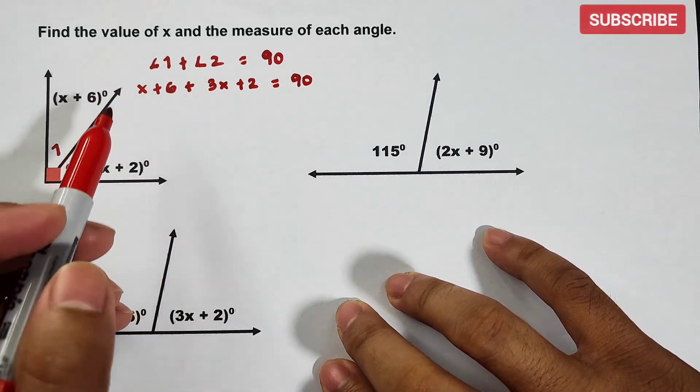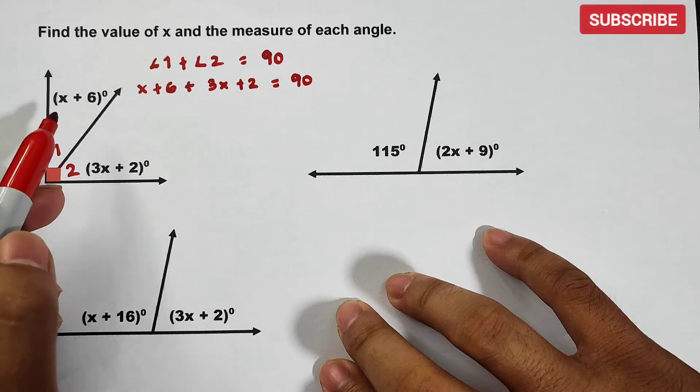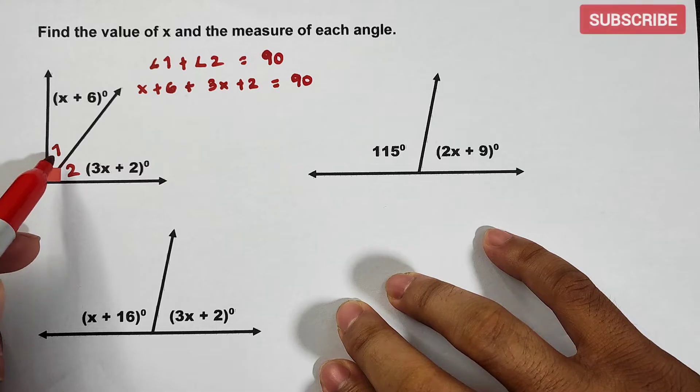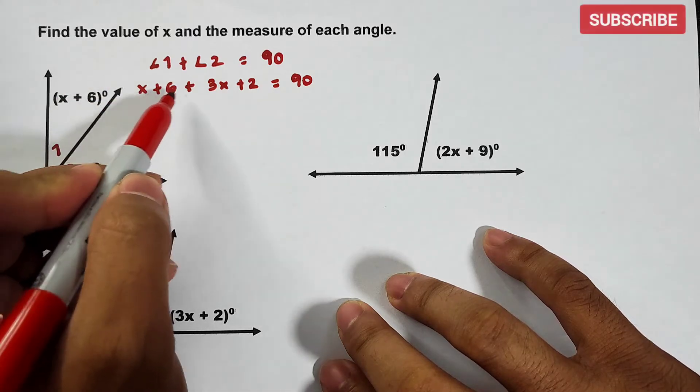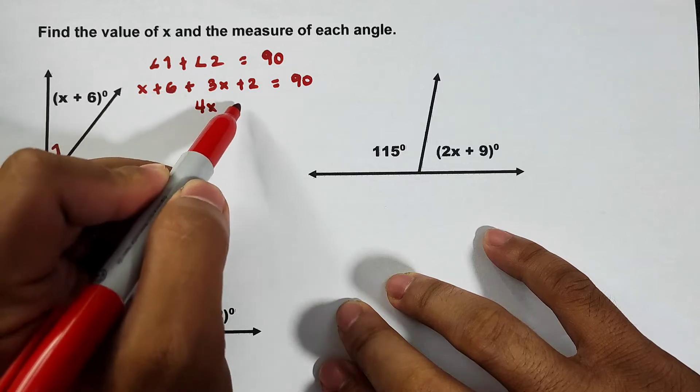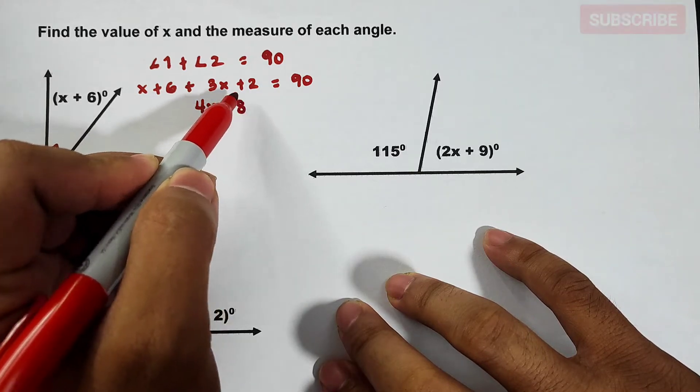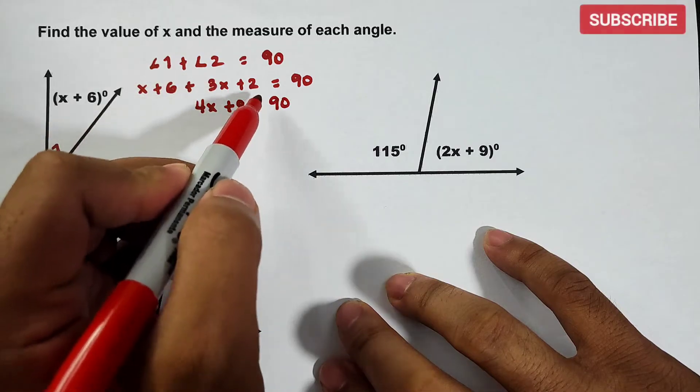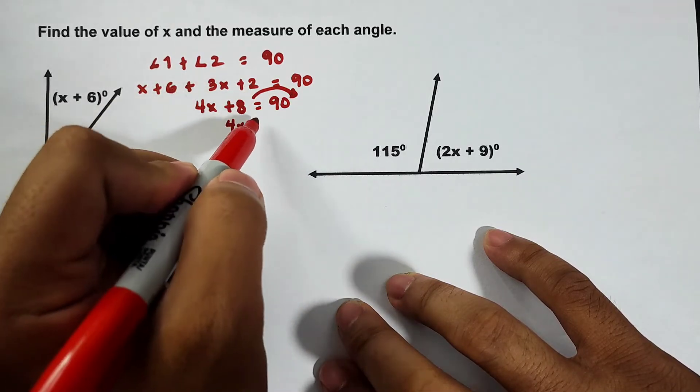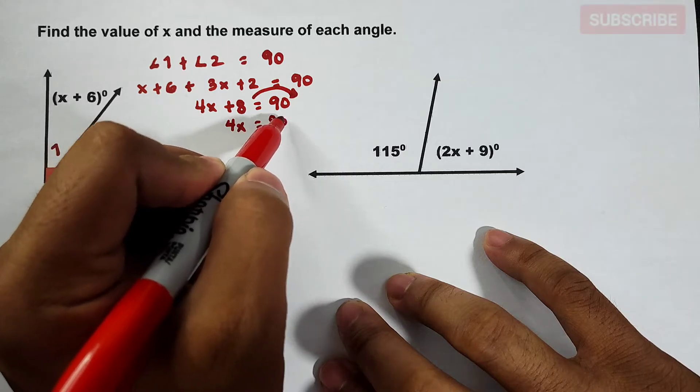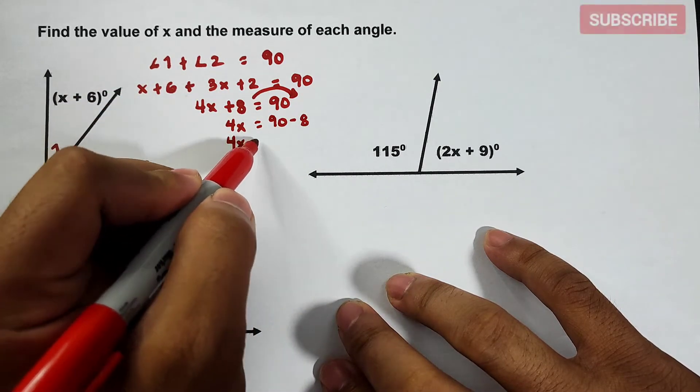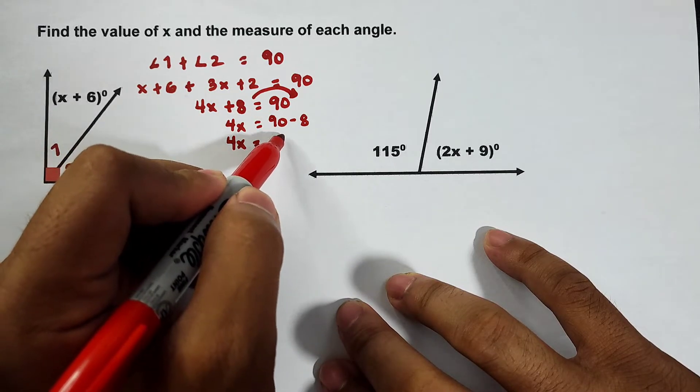Our first thing, the first thing we need to do here guys, is to solve first for the value of x for us to find the measurement of these two angles. x plus 3x is 4x, 6 plus 2 is 8, is equal to 90. Transpose 8 to the other side, it will become 4x is equal to 90 minus 8. So we have 4x is equal to 82.